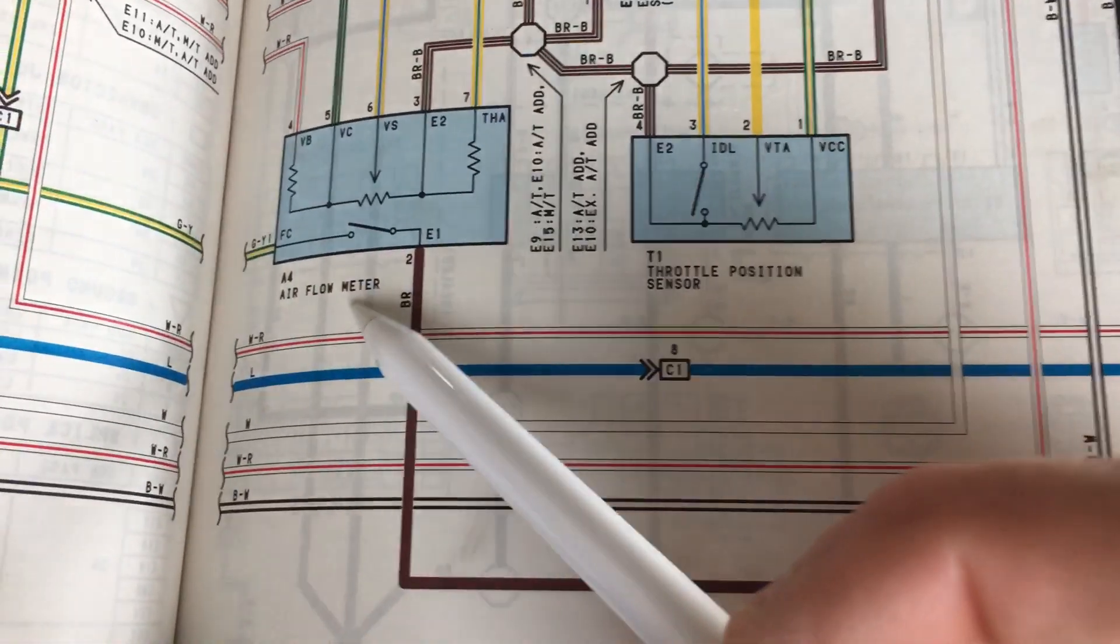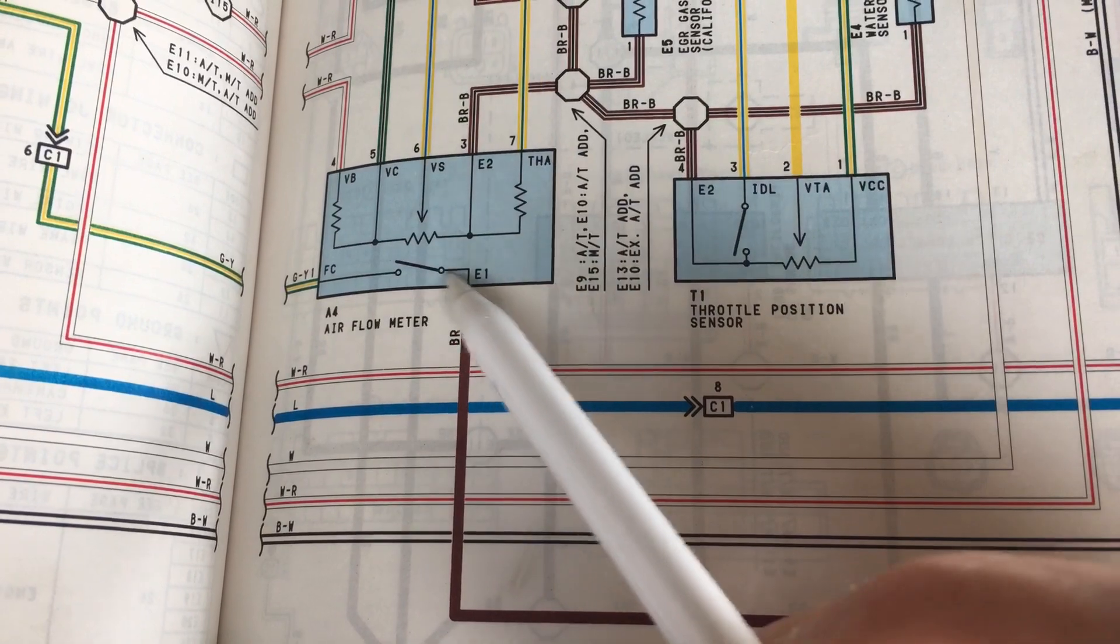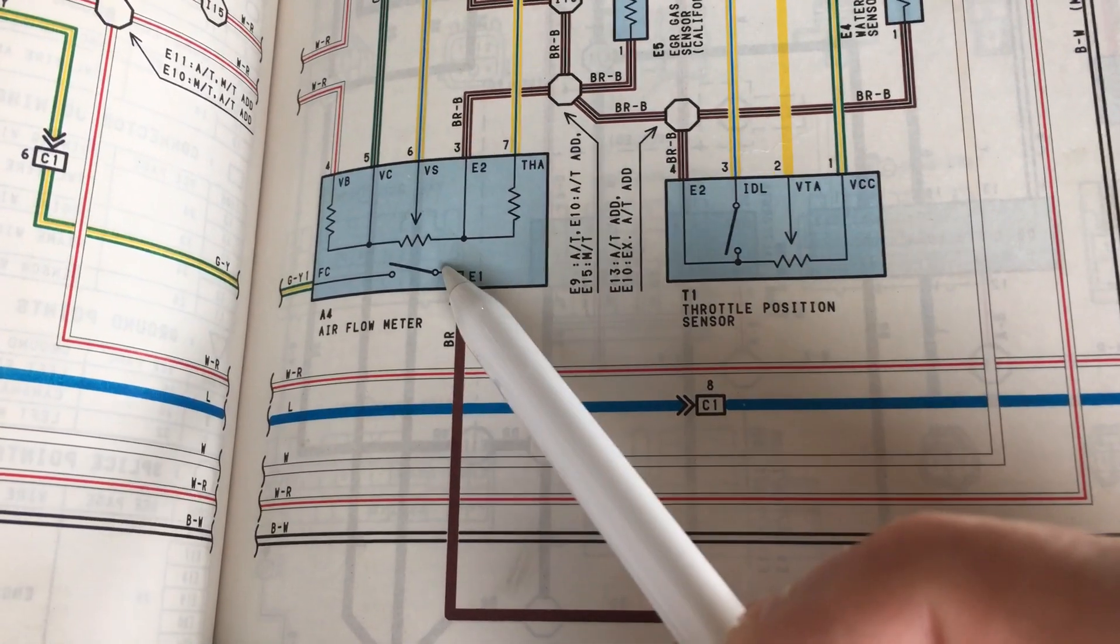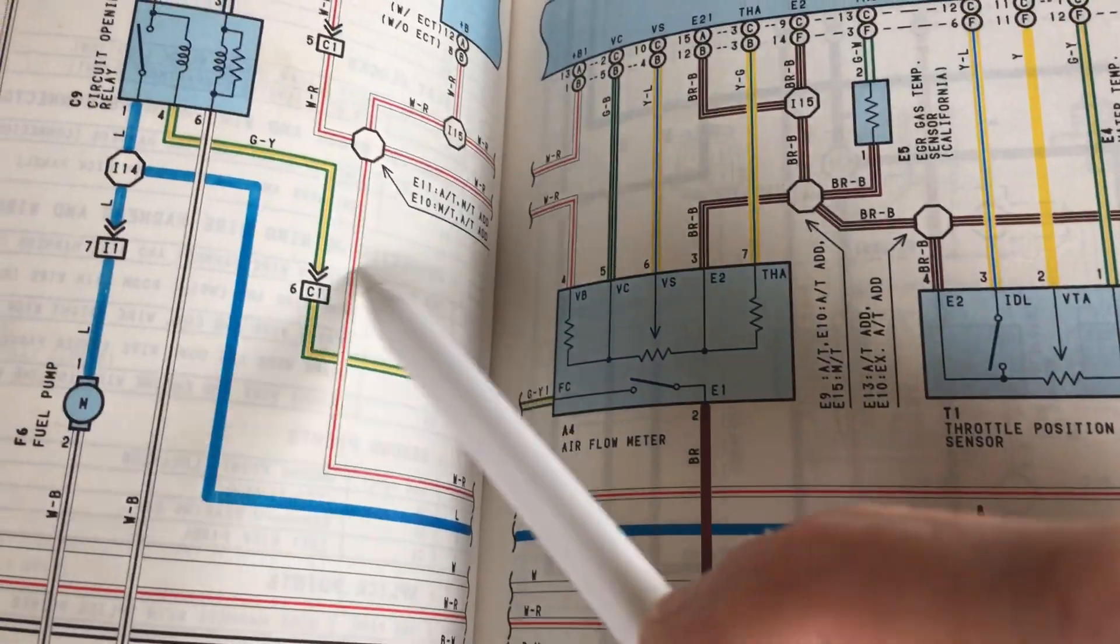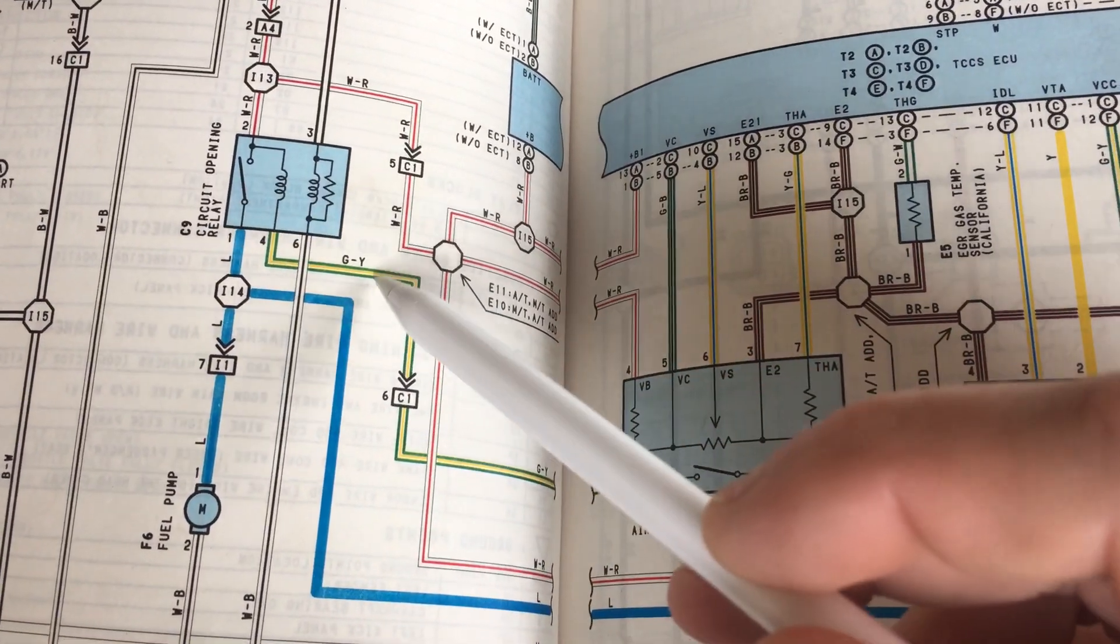Look right here at the air fuel meter green-yellow wire. When the door opens, the brown wire grounds that wire. If you trace it over here, it goes to your circuit opening relay.